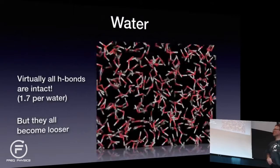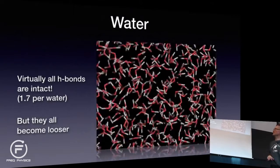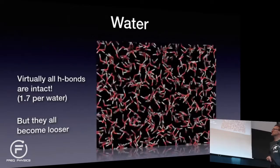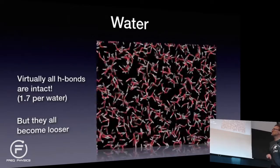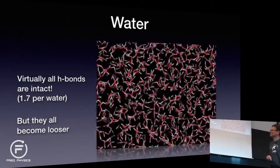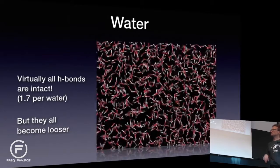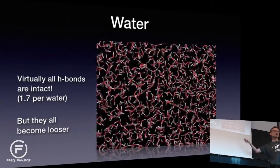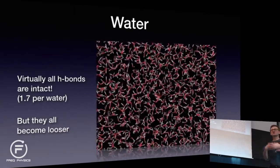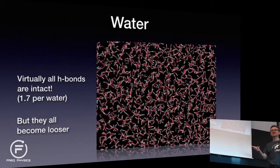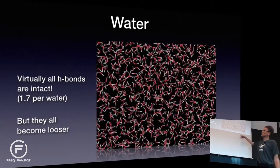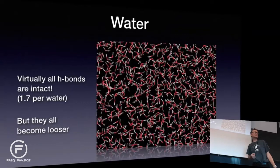This is liquid water, and you've probably seen ice crystals. Liquid water behaves quite differently. In ice crystals, every water molecule participates in four hydrogen bonds — it donates two and accepts two — so that means two full hydrogen bonds per water molecule. In liquid water you have almost the same number: 1.7.